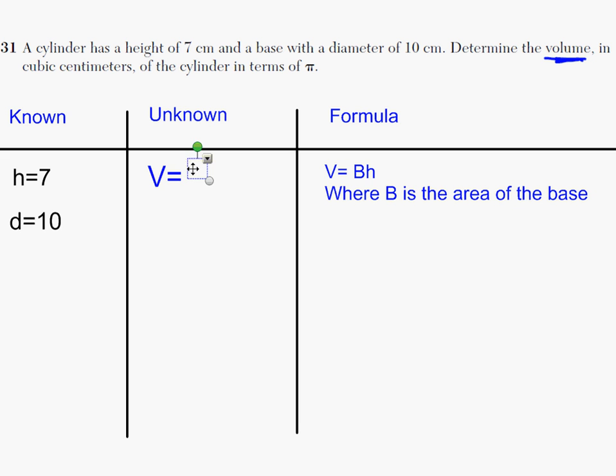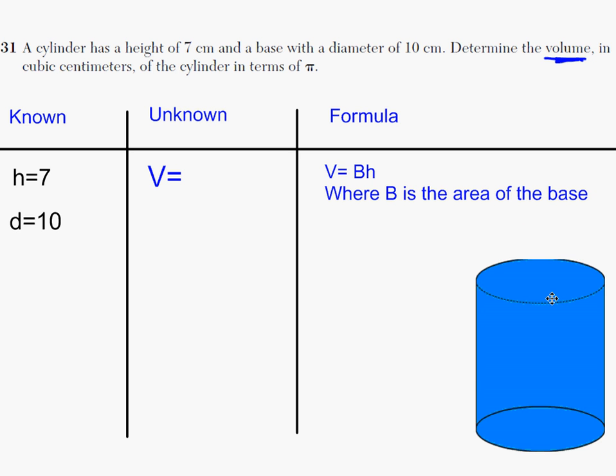So now at this point one may wonder, well what do I need the diameter for if the formula says V equals B times H? Well you have to think about what this means. That B stands for area of the base. So let's think about a cylinder. This is a cylinder and we're told that the diameter is 10 centimeters. Now does that mean that the base is automatically 10 centimeters? No.